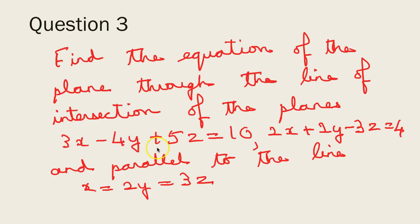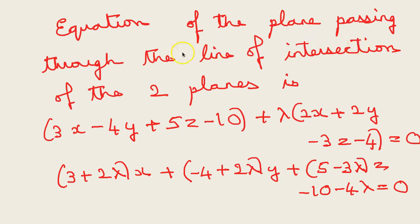Problem 3: Find the equation of the plane through the line of intersection of the two planes 3x − 4y + 5z = 10 and 2x + 2y − 3z = 4, and parallel to the line x = 2y = 3z. Whenever you are given a plane passing through the line of intersection of two planes, you take: (equation of first plane) + λ × (equation of second plane) = 0. That gives: 3x − 4y + 5z − 10 + λ(2x + 2y − 3z − 4) = 0.